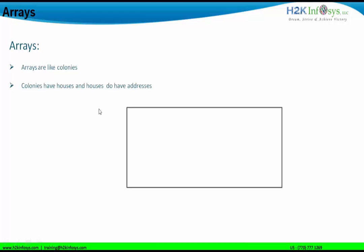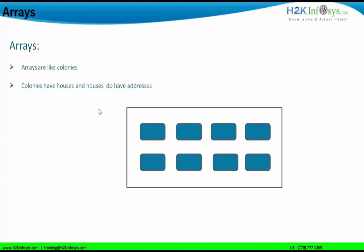A colony has houses, and houses have addresses. These blue blocks represent houses, each situated in a particular position defined by its address. For example, if I need to deliver a letter to a particular house, I need to know the address. Otherwise I will be unable to deliver it. Similarly, a postman needs to deliver a letter to a house in a particular colony, and based on the address the letter is delivered. Every house in a colony has a specific position or address by which it is distinguished from other houses.